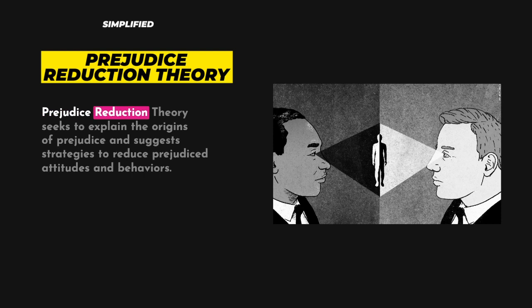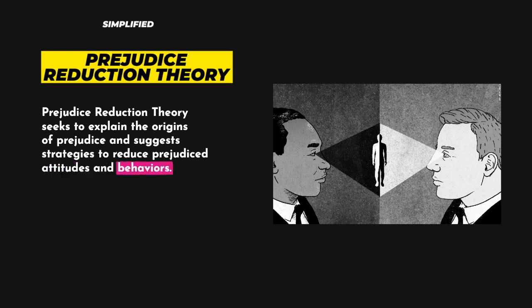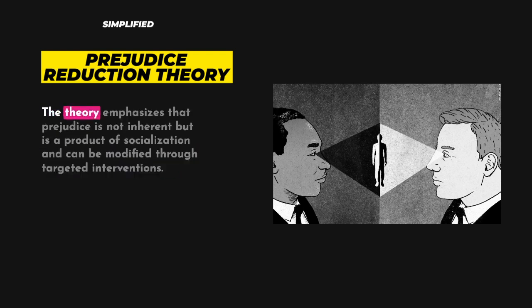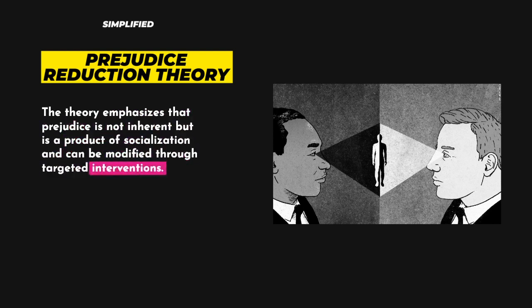Prejudice Reduction Theory seeks to explain the origins of prejudice and suggest strategies to reduce prejudiced attitudes and behaviors. It posits that prejudice is learned through socialization processes and is influenced by social norms, stereotypes, and intergroup dynamics. The theory emphasizes that prejudice is not inherent but is a product of socialization and can be modified through targeted interventions.